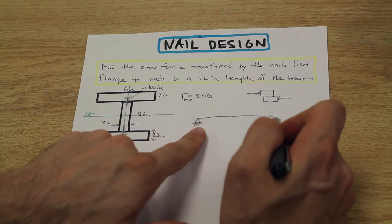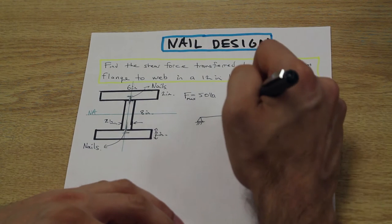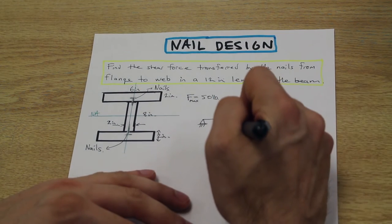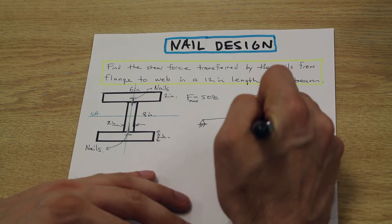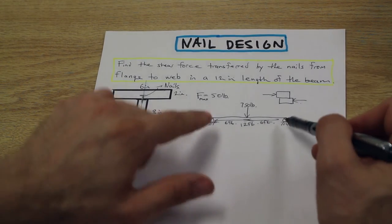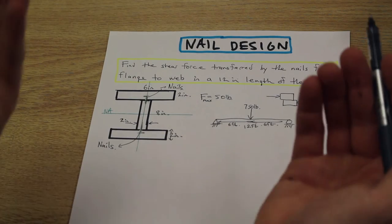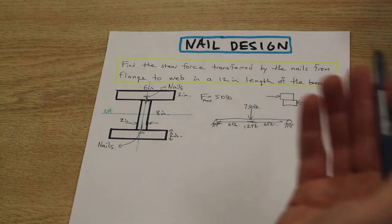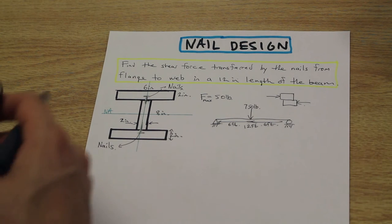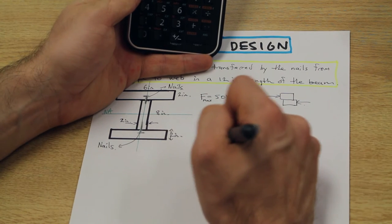In this question, we have a 750 pound force acting in the center. This is a 12 foot span, so this is six feet and this is six feet. Because this is symmetrical, a simply supported beam, we can easily find the reactions. The reactions are going to be half of the 750 pounds because it's symmetrical, right in the center. The reactions need to balance out the one external force in the middle. The reaction forces here are 375 pounds.